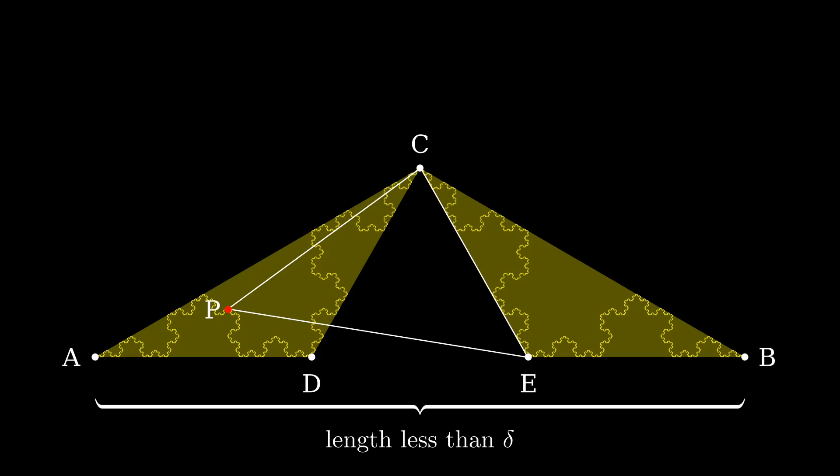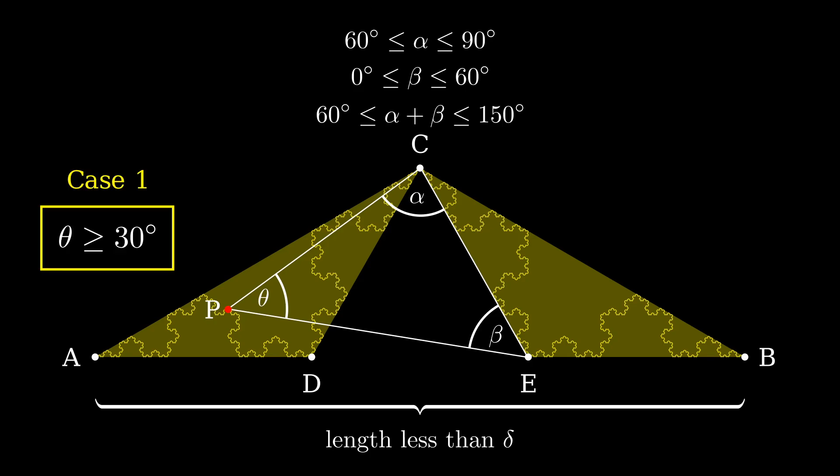Now consider the triangle formed by adding the segment CE. Let the angles at the three vertices be denoted by alpha, beta, and theta. The angle alpha will have a value between 60 degrees and 90 degrees. The angle beta will have a value between 0 degrees and 60 degrees. Adding these two inequalities shows that alpha plus beta has a value between 60 degrees and 150 degrees. But the sum of all three angles is 180 degrees, so angle theta must be greater than or equal to 30 degrees.